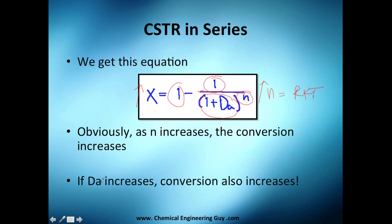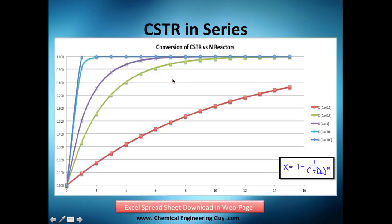Not only that — as the Damköhler number increases, (1 + Da) increases, so the denominator grows, the fraction becomes small, and 1 minus something small gives you nearly 1, which is high conversion. If you want to check the Excel spreadsheet I made, go to chemicalengineeringguide.com, courses, reactor engineering, then materials or extra materials and you'll find it there. I took a screenshot for the video.